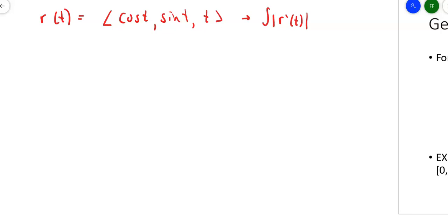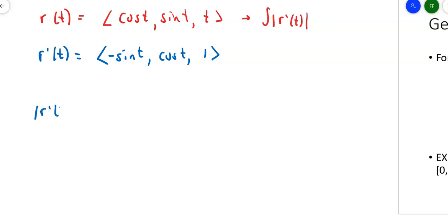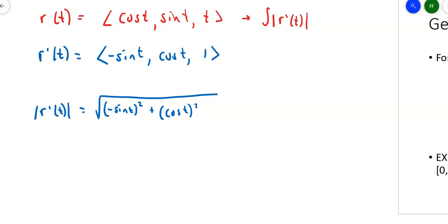The first thing is to find R′(t), which is simply the derivative of each component. So R′(t) is ⟨−sin t, cos t, 1⟩ — the derivative of cosine is negative sine, the derivative of sine is cosine, and the derivative of t with respect to t is just 1. Now I need to find the magnitude of R′(t), which is the square root of (−sin t)² + (cos t)² + 1².